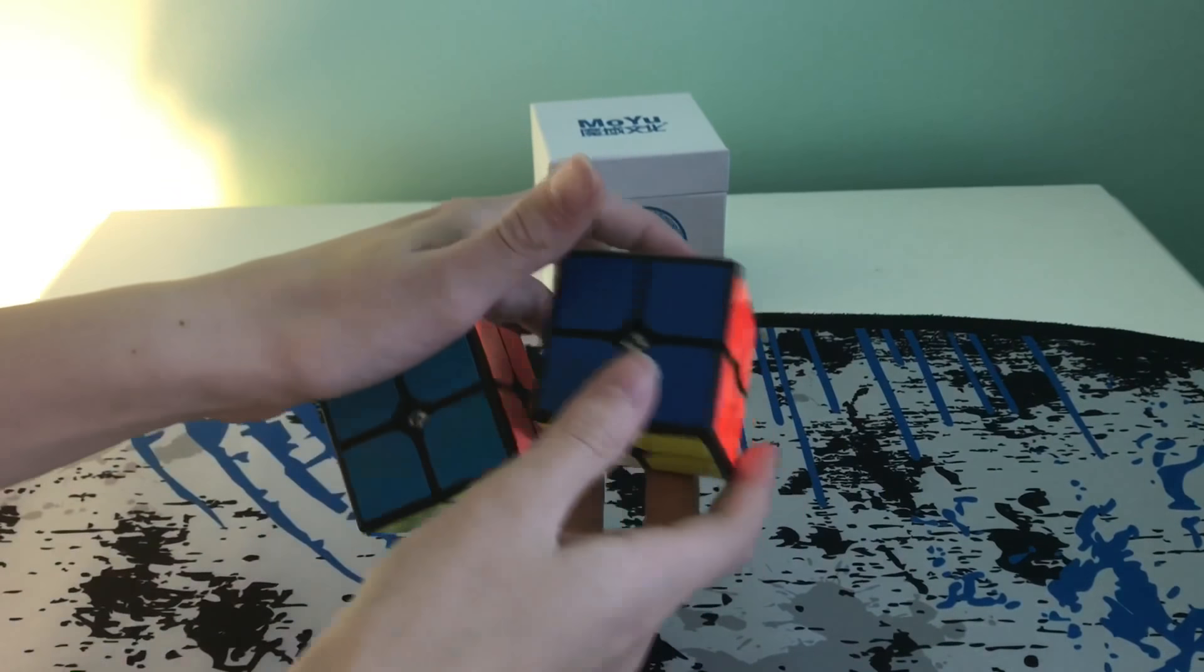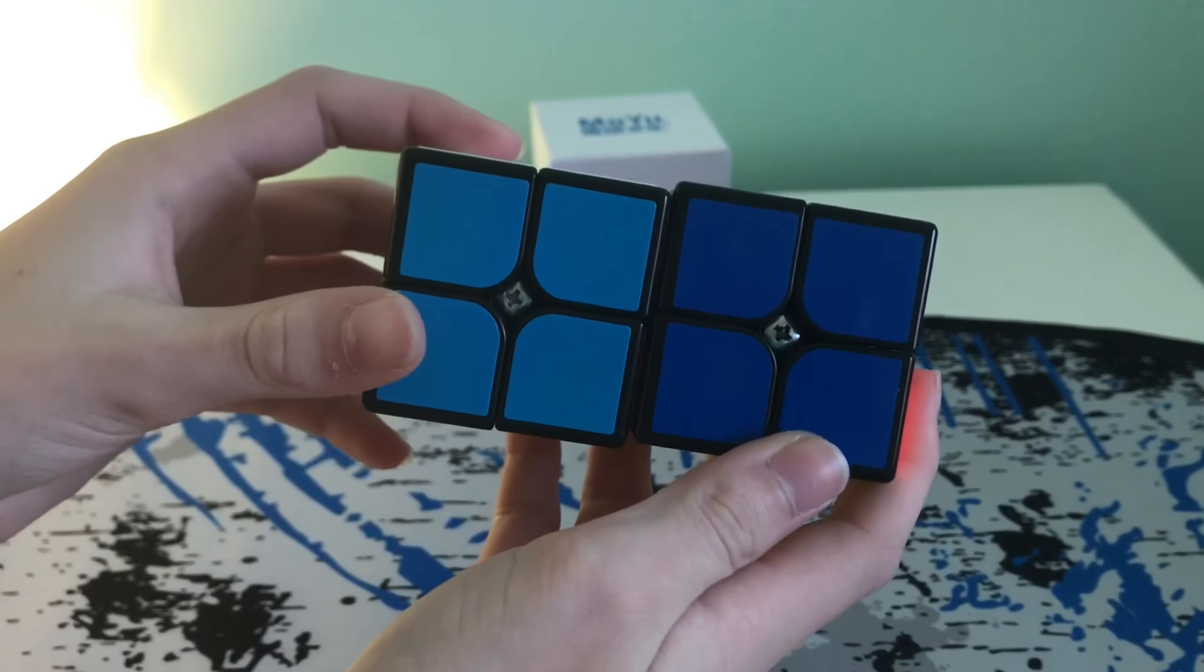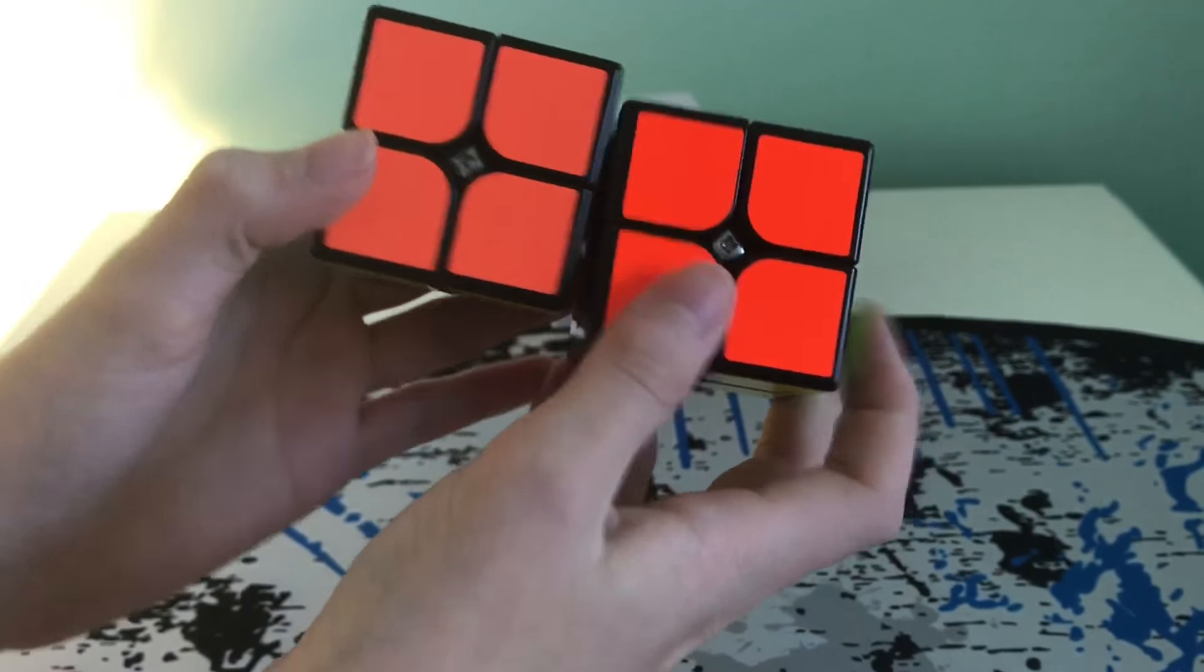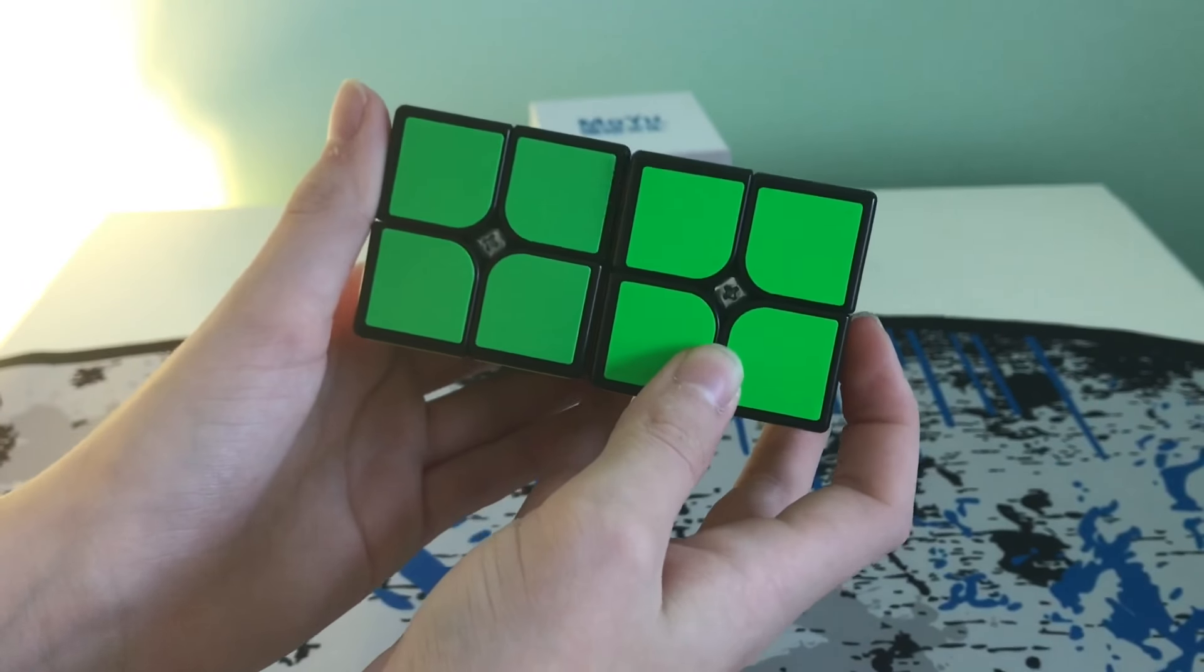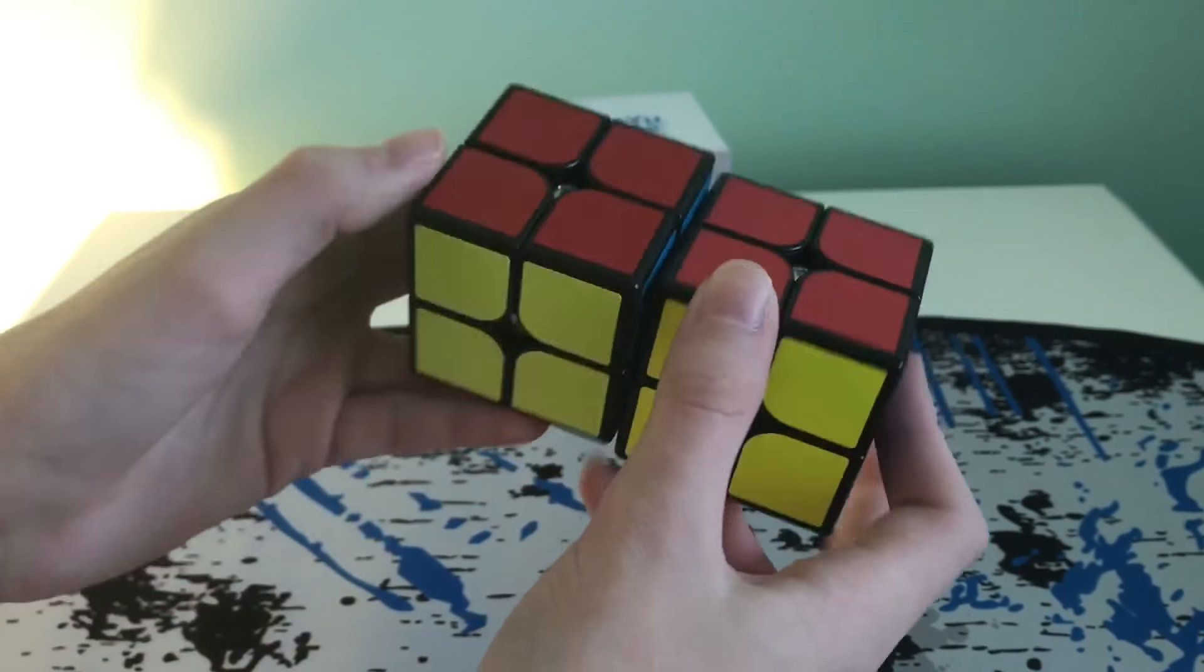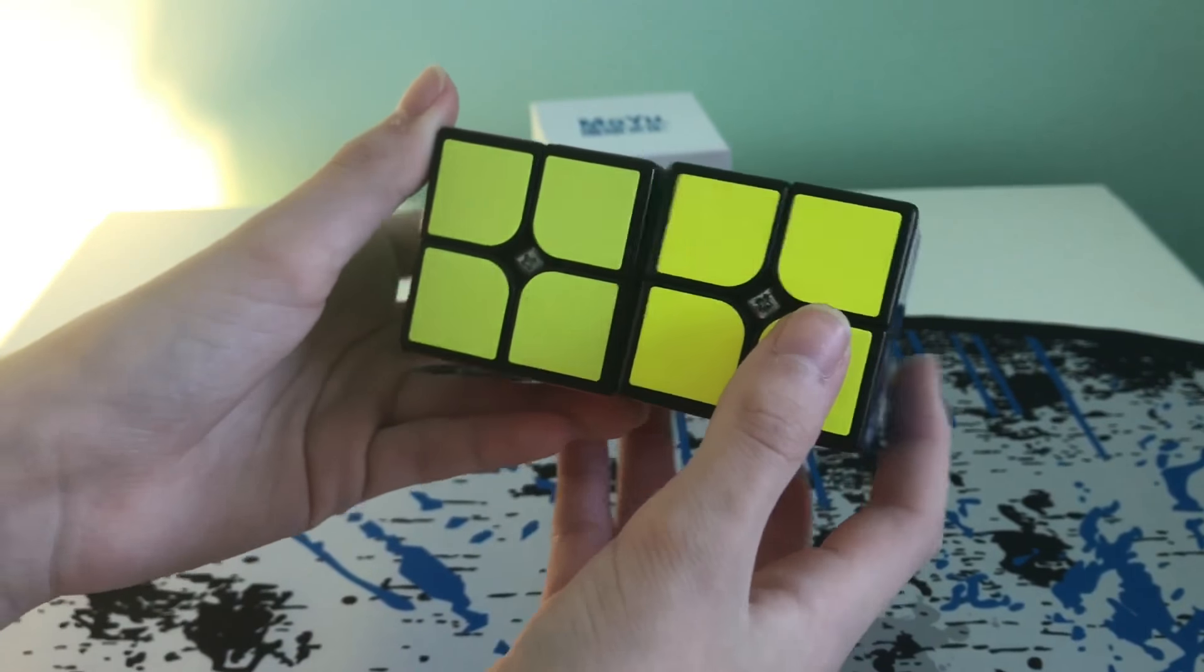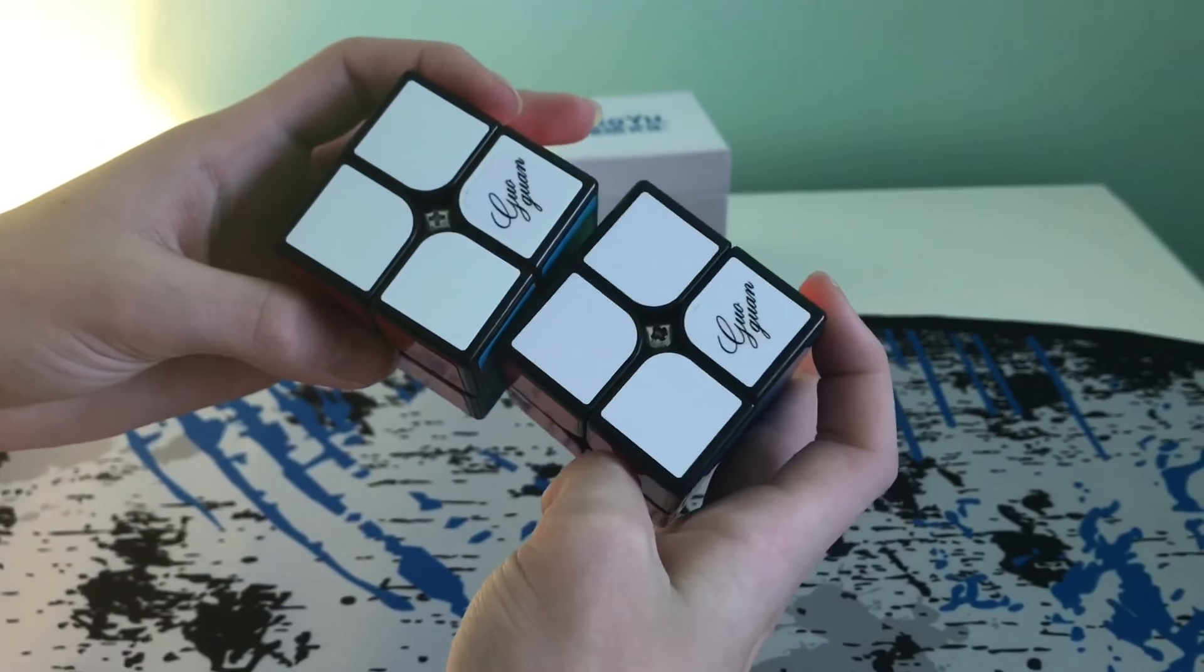So yeah, here's the magnetic version. And as you can see, the blue is definitely a lot darker. The orange is a little bit more vibrant. The green is a little bit lighter. Red looks the same. Yellow looks more bright. And obviously white is the same.